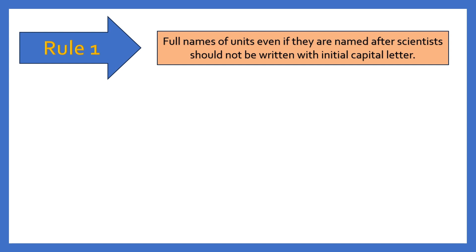So let us discuss about the rules. The first rule: full names of units even if they are named after scientists should not be written with initial capital letters. So what does that mean? For example, let's say a boy, let's say his name is Santosh. So Santosh ate five kilograms of jalebi.